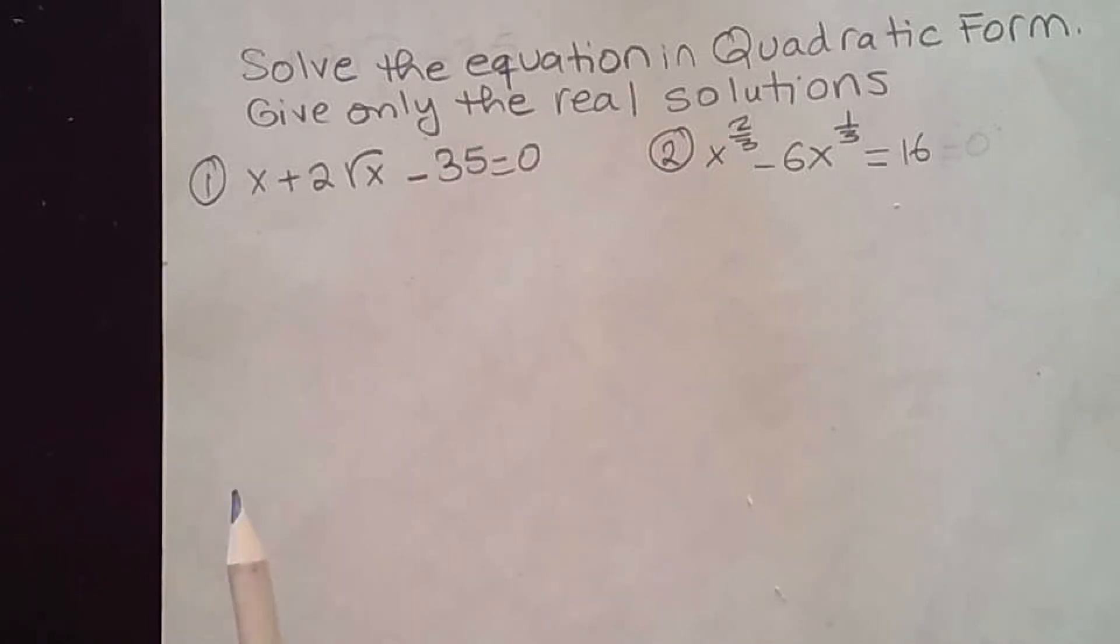If you take a look at the first problem, you notice that the middle term has square root of x, and the first term right here is x. That's really the square of square root of x.